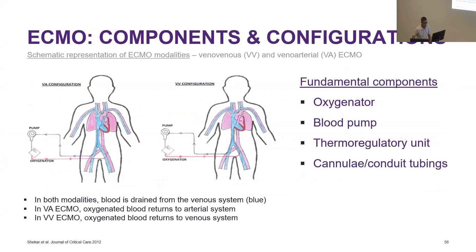The fundamental components of ECMO include the oxygenator, which oxygenates the blood; the blood pump, which propels blood through the circuit; the thermoregulatory unit; and large-bore cannulae and conduit tubings. Here is a schematic of the different ECMO modalities. The common forms are VV (veno-venous) ECMO and VA (veno-arterial) ECMO. In both modalities, blood is drained from the venous system, goes through the oxygenator to be oxygenated. For VV ECMO, oxygenated blood returns to the venous system; for VA, it returns to the arterial system.